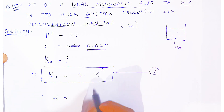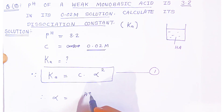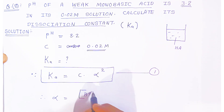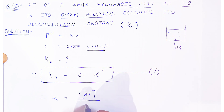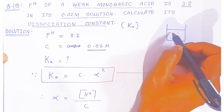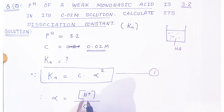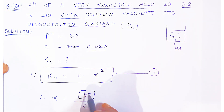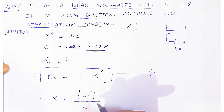The degree of dissociation α is calculated as the concentration of H⁺ ions divided by the total concentration of the solution. Since it is a monobasic acid, you divide the concentration of H⁺ by the concentration of the whole solution.